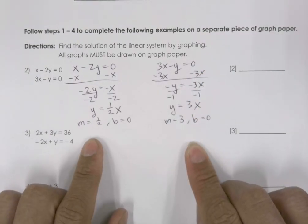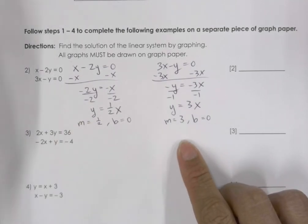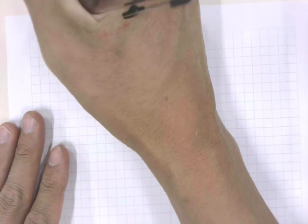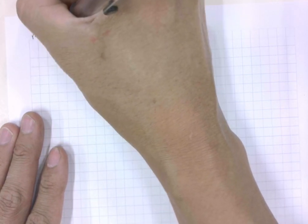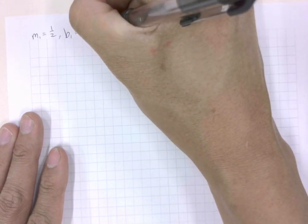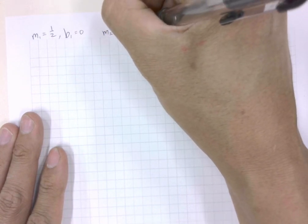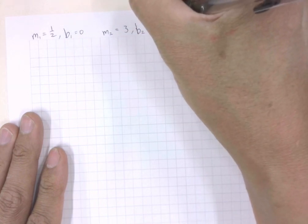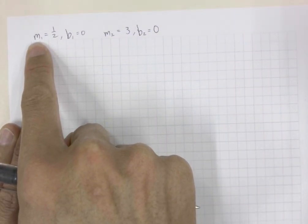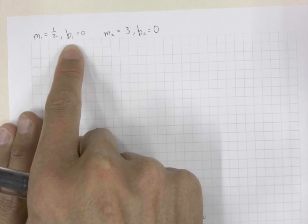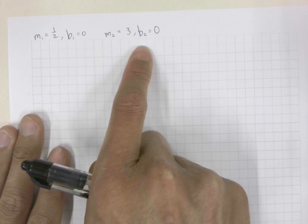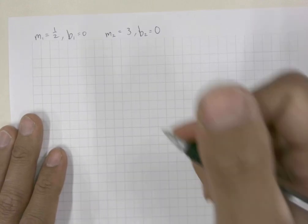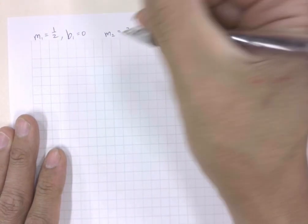Now that we have our m and b for both lines, we can graph them. For line 1: m1 is one-half and b1 is 0. For line 2: m2 is 3 and b2 is 0. Let's go ahead and graph this on graph paper.